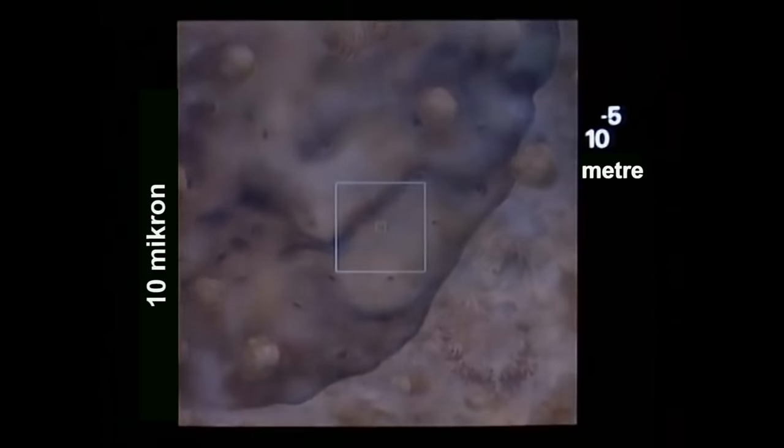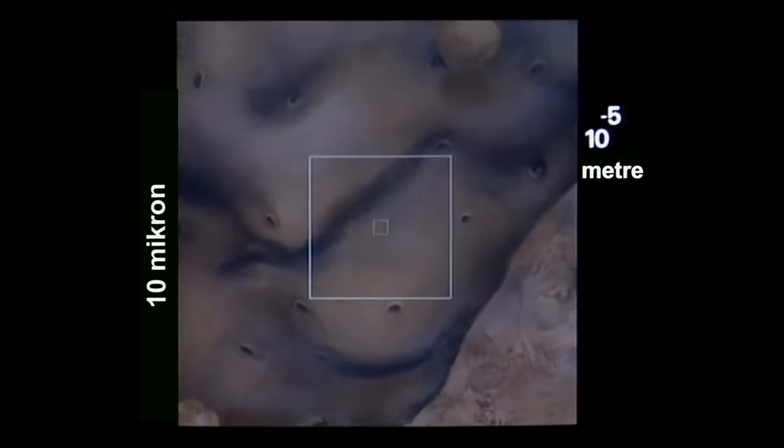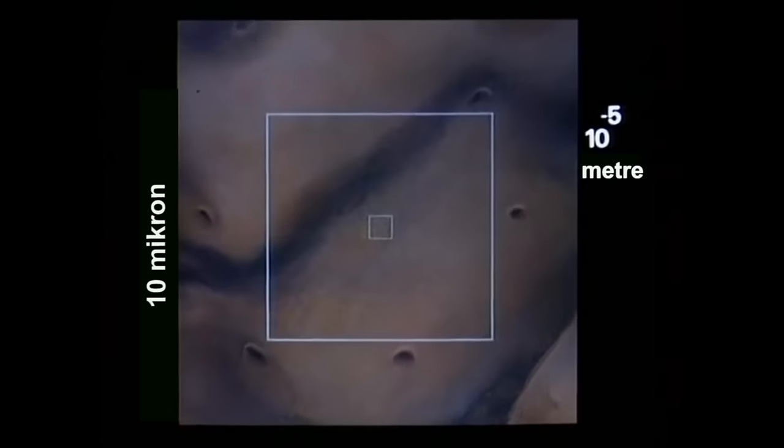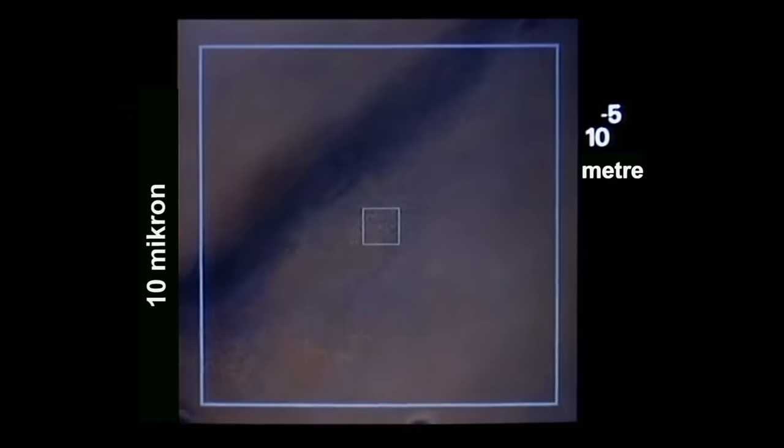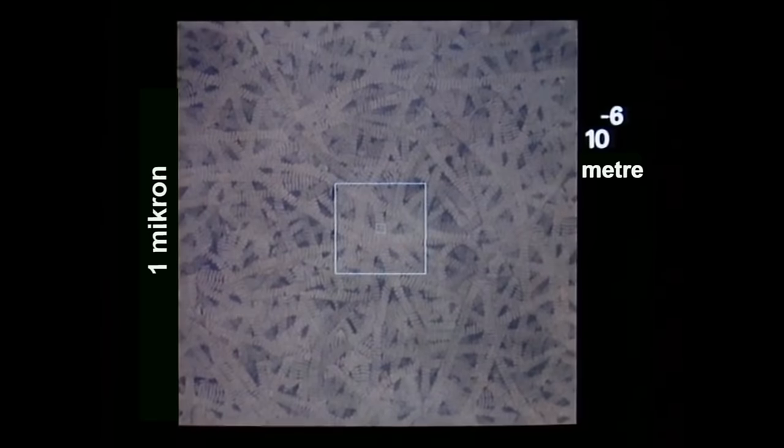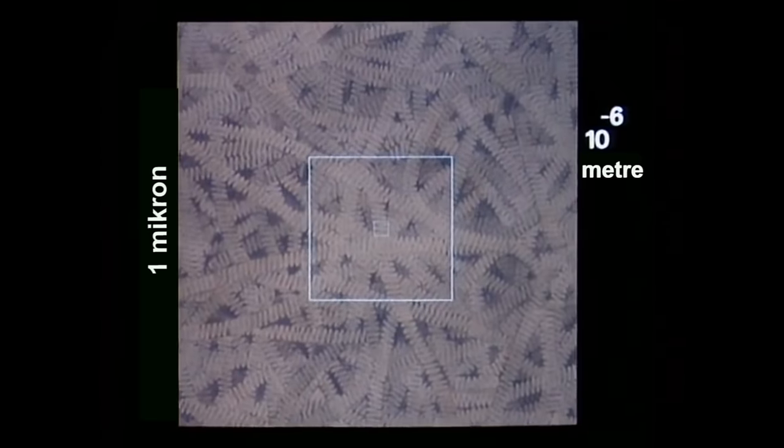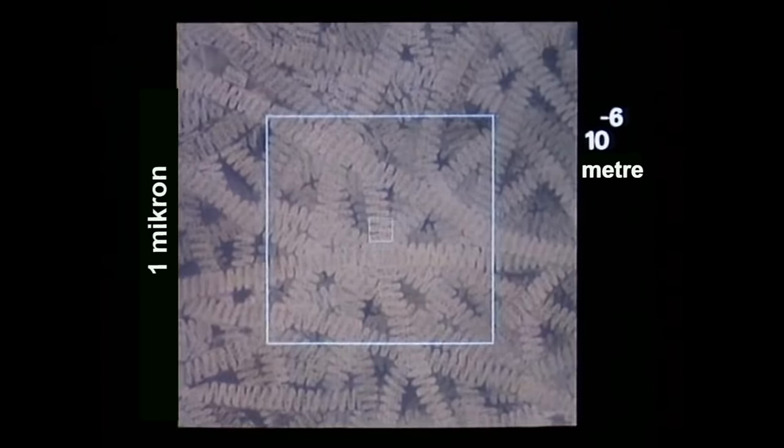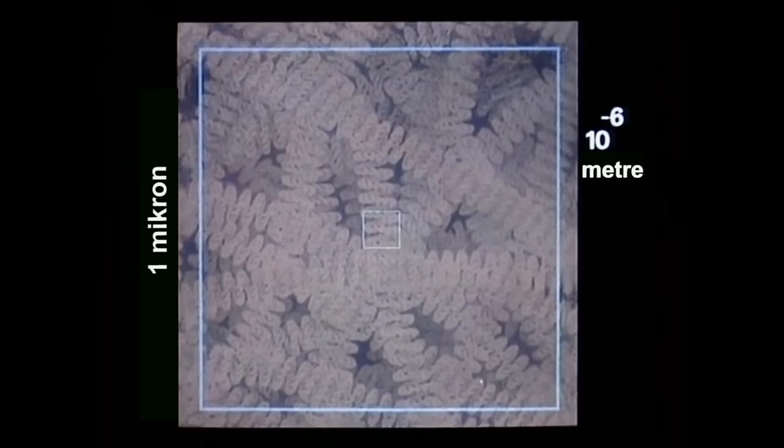Beyaz hücreye giriyoruz. Hayati organeller arasında hücre çekirdeğinin gözenekli duvarı ortaya çıkıyor. İçindeki çekirdek DNA'nın kıvrımlı sarmalları içinde insanın kalıtımını saklıyor. Yaklaştıkça çift heliksin kendisine geliyoruz.